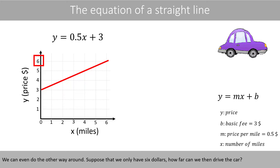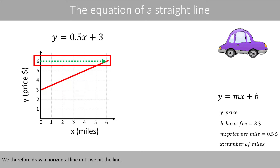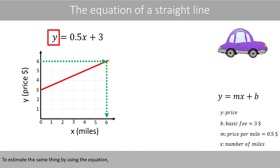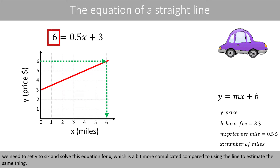We can even do the other way around. Suppose that we only have 6 dollars. How far can we then drive the car? We therefore draw a horizontal line until we hit the red line, and then the vertical line like this. We see that we can drive 6 miles if we have 6 dollars. We estimate the same thing by using the equation — we need to set Y to 6 and solve the equation for X, which is a bit more complicated compared to using the line.